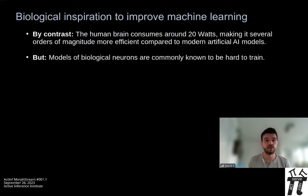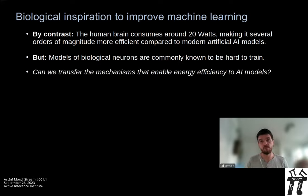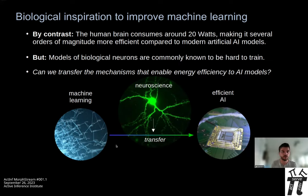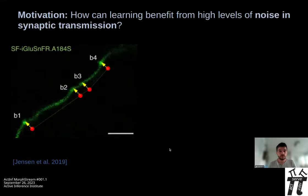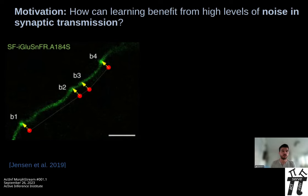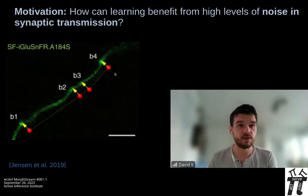Our goal is to transfer mechanisms from machine learning. We start from the machine learning side where we already know our way around — we have models that give us really impressive results, but they're not efficient. We want to transfer them to a new efficient AI generation, using inspiration from neuroscience to make this transfer faster and possible in the first place.